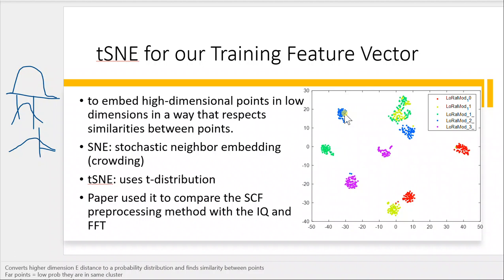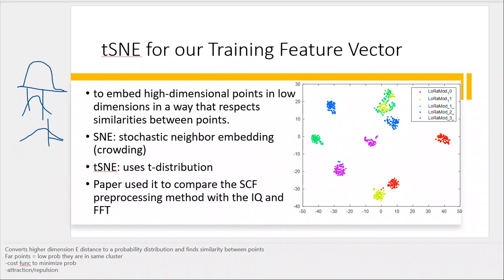It finds the probability that points are within the same cluster or not. We also have attraction and repulsion: if points are too far apart, there is a low probability they are from the same cluster. It converts the higher-dimension Euclidean distance to a probability distribution and finds similarity between points. If they are very similar, they attract; if not similar, they repel.